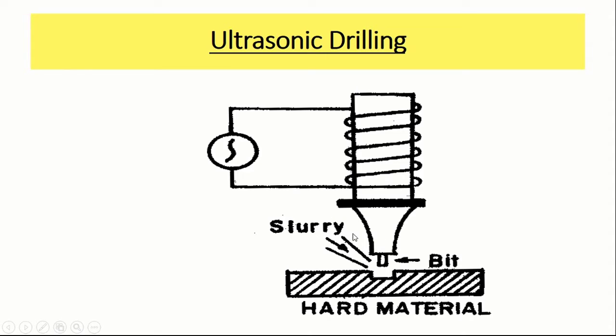Some slurry is made to flow between the bit and the plate in which the hole is to be made. Ultrasonic generator causes the tool bead to move up and down very quickly.